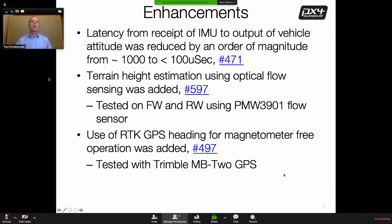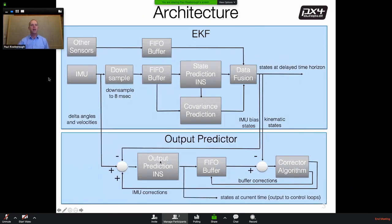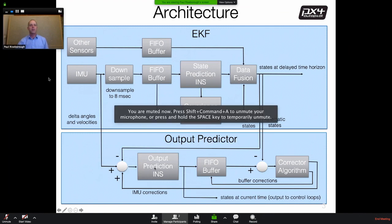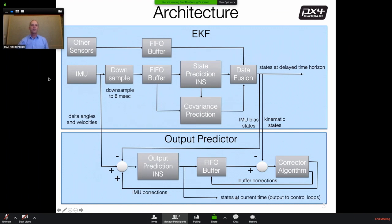Three major enhancements have gone through in the last 12 months. The first and most significant is that latency from receipt of IMU data to output of vehicle attitude has been reduced by an order of magnitude to under 100 microseconds. This was achieved by changing the order of calculations so that the first thing the estimator does when it receives IMU data is run the output prediction INS and immediately publish those outputs to the attitude and other control loops. The remaining EKF calculations, which can take up to two milliseconds, are then completed before performing the corrections.